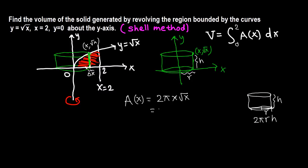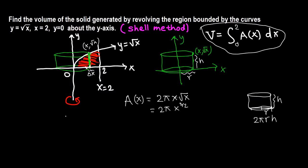Simplifying: 2π times x times x^(1/2). Combining the x terms: x^1 times x^(1/2) equals x^(3/2). So A(x) equals 2π x^(3/2). Now we integrate this area to find the volume.